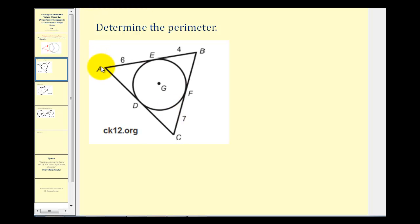If we start at point A, segment AE would be congruent to segment AD. So this would be six units. Looking at point B, segment BE is congruent to segment BF. So the length of BF must be four units.